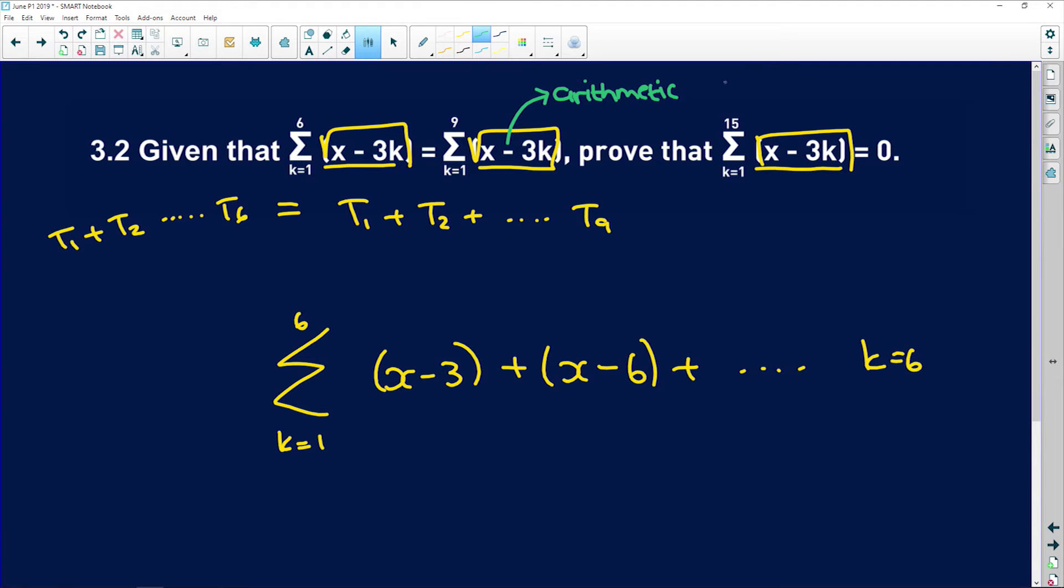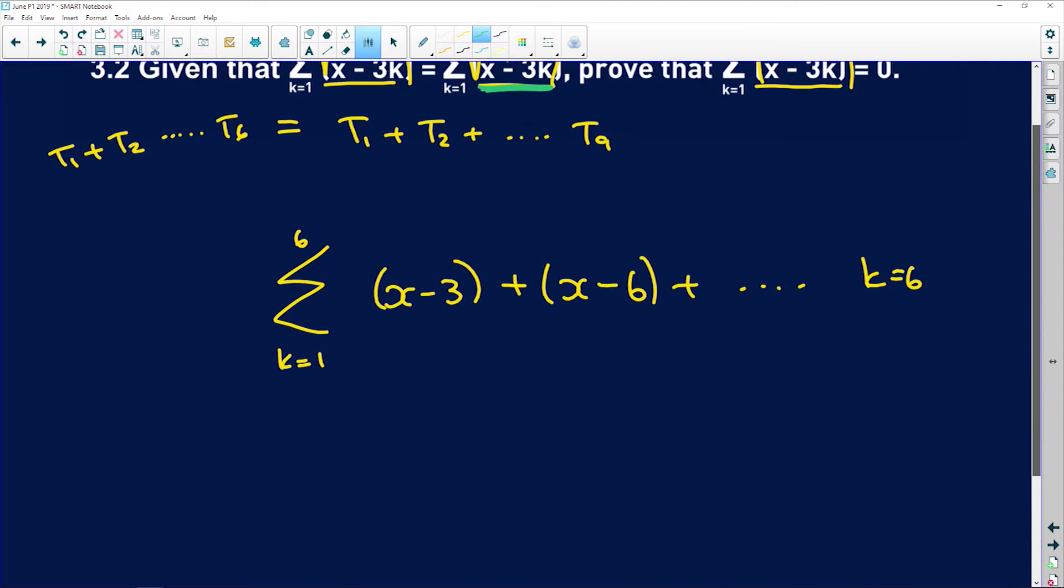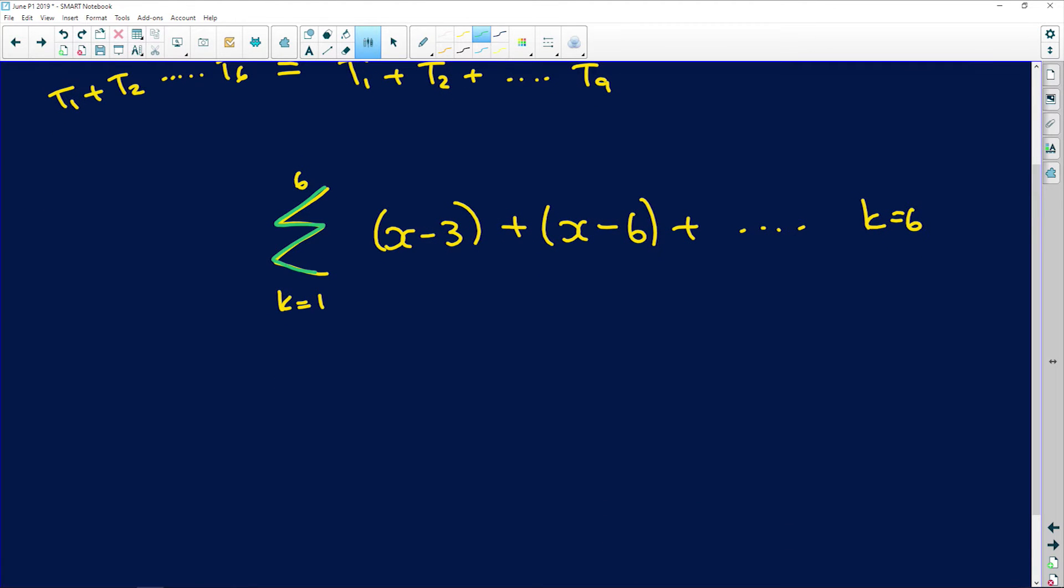So arithmetic should immediately tell you that because we have a sigma notation, we are looking for a sum, and therefore Sn is equal to n over 2 times a plus n minus 1 d. But we don't know d, so another way of writing this is Sn is equal to n over 2 times a plus the last term.